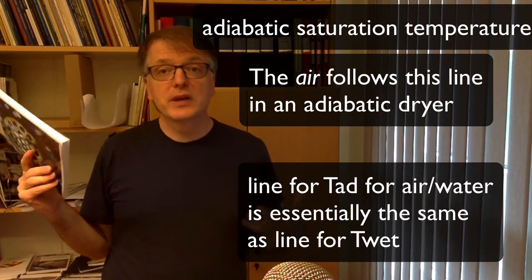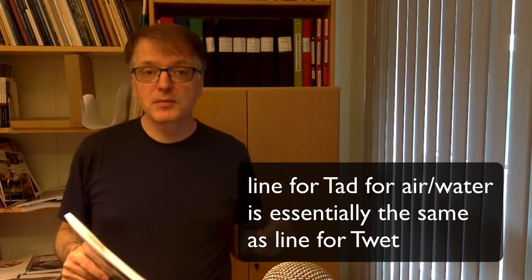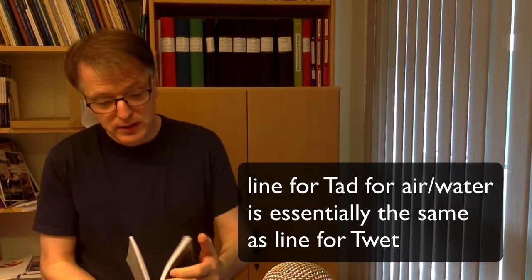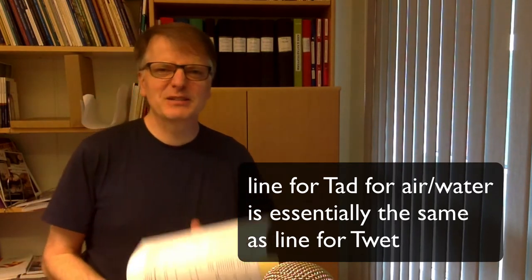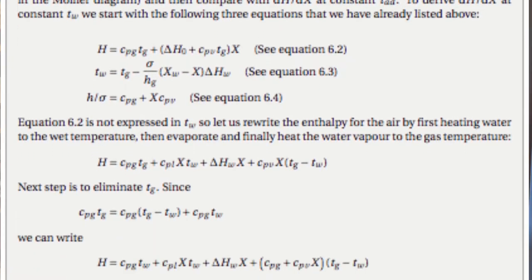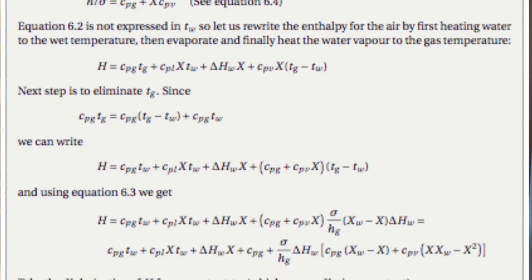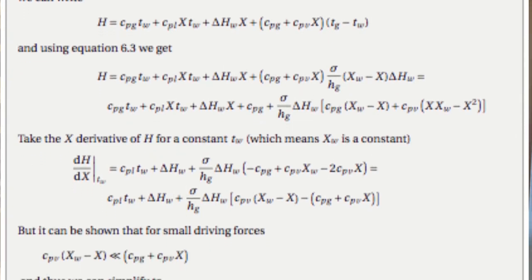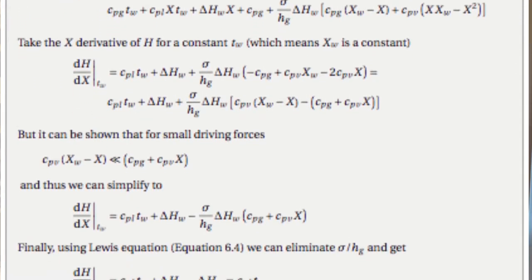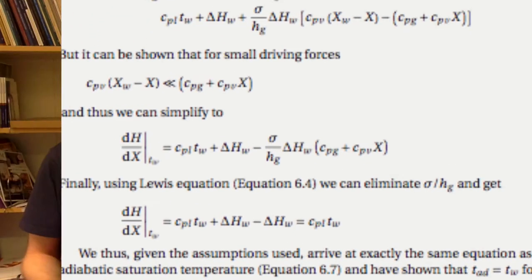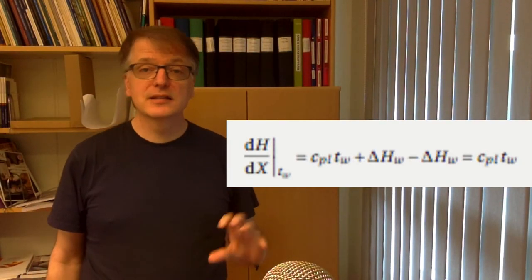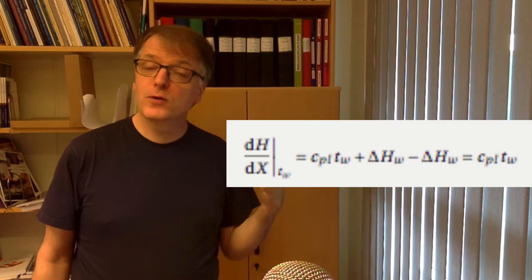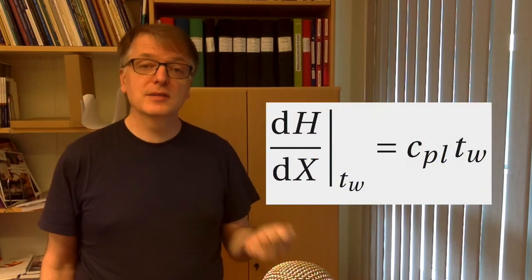So how can we tell that these are the same? Well, we can calculate the slope of the wet temperature line and that's a bit difficult. In my compendium I have a whole page with the derivation of that and you have to make some simplifications and it looks a bit ugly in the middle. But eventually we get to the thing that the slope, so delta H divided by delta X, is Cp for water as liquid times the wet temperature.